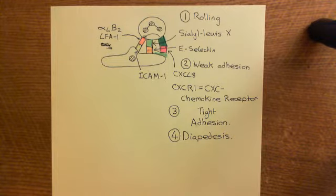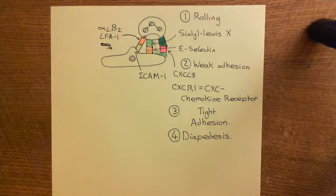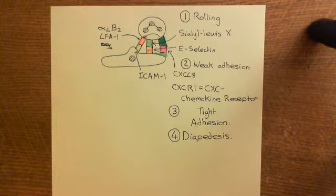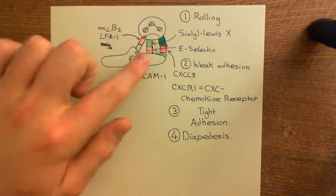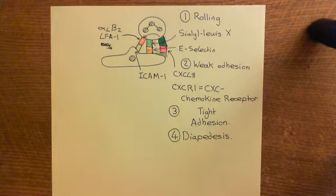What we're going to see now is how the type 2 activation changes over time. When you expose an endothelial cell to interleukin-1 and tumor necrosis factor alpha, it begins the process of type 2 activation. Initially, type 2 activated endothelial cells produce E-selectin and CXCL8, which help in the recruitment of neutrophils.